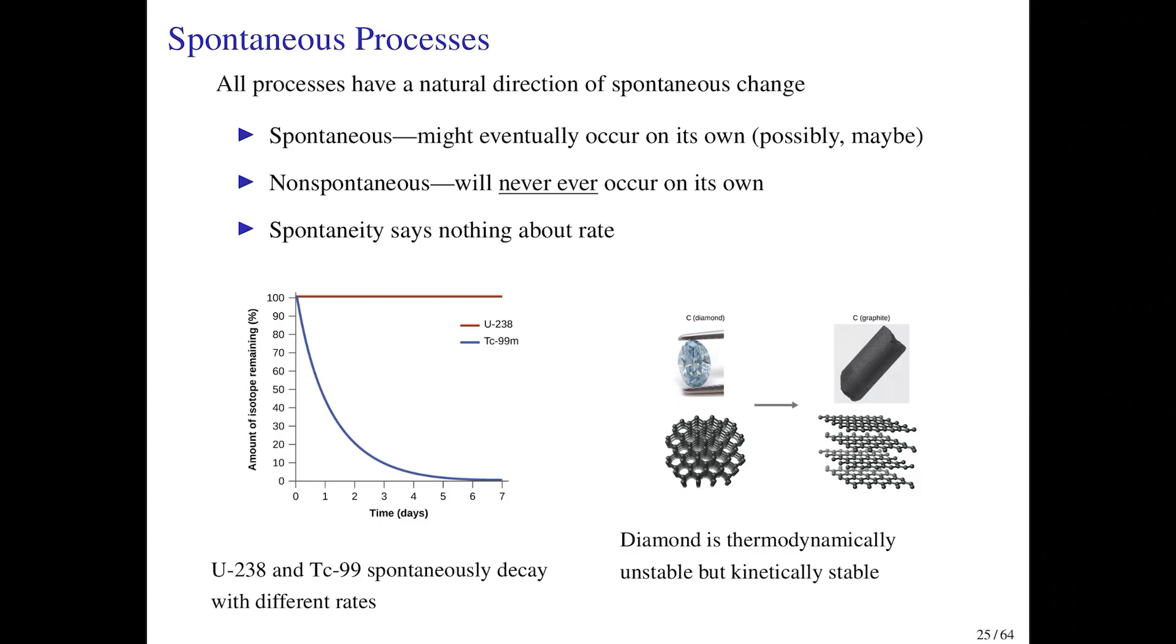At which the process occurs. I have two examples from the textbook on this slide. On the left, we're considering the radioactive decay of uranium-238 and technetium-99.